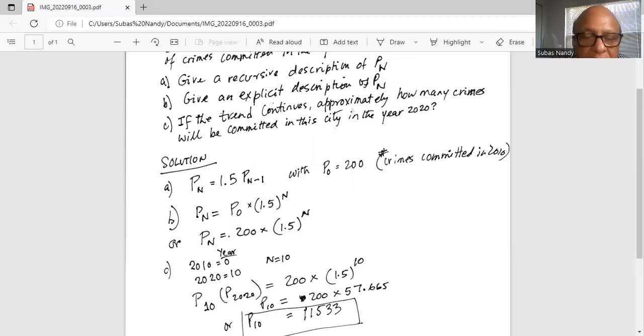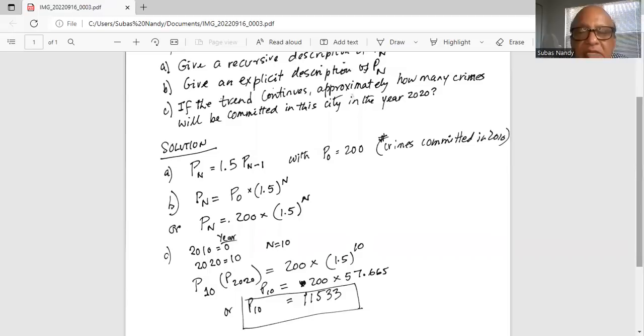Which is 200 times 57.665. So P subscript 10 in the 10th year since 2010, that is P2020, will be 11,533.